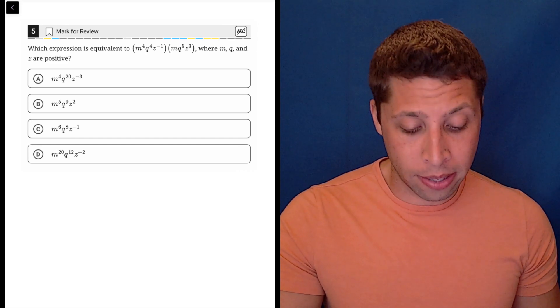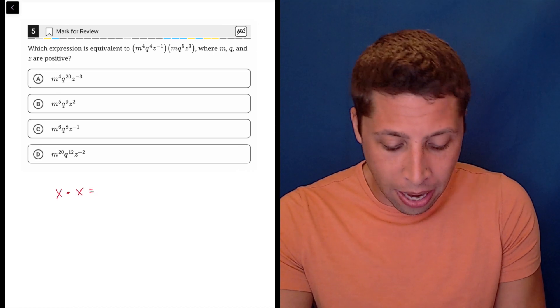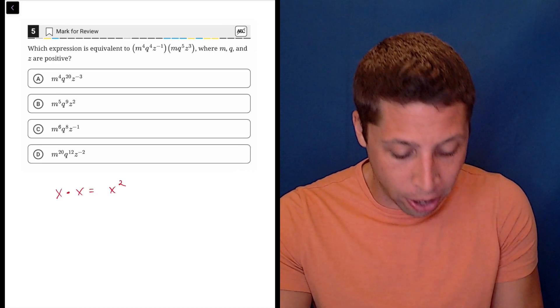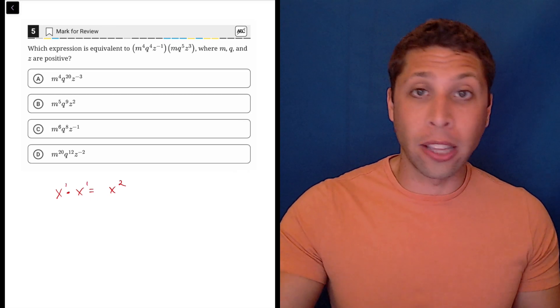So the rule is that we add the exponents, and you know this, right? Because if we think about it, what is x times x? Well, that's x squared, right? Because it's x to the first times x to the first. We're adding the one and the one to get two.